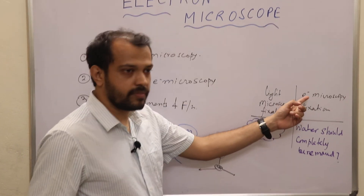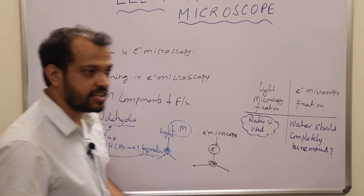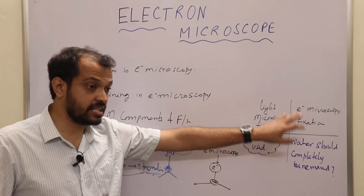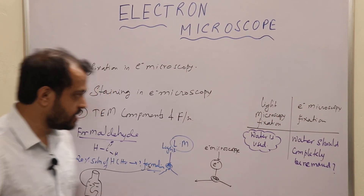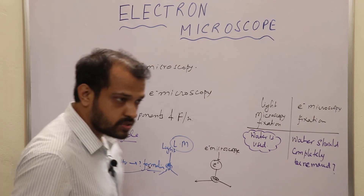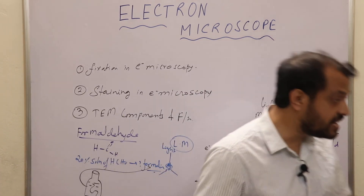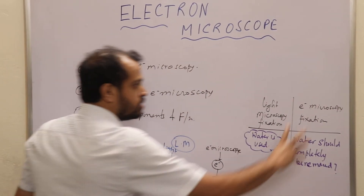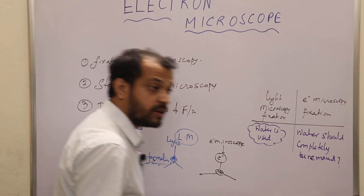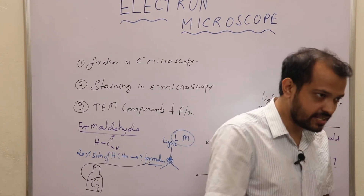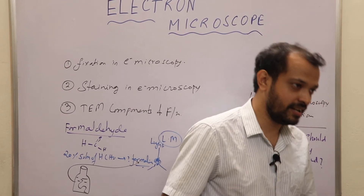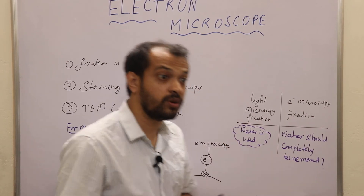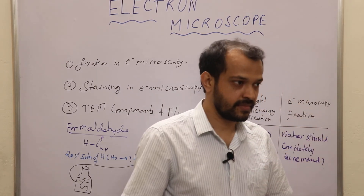Now we will talk about electron microscopy fixation — that is, the fixatives used in electron microscopy. We don't directly use formaldehyde in electron microscopy fixation, because formaldehyde is a strong agent that needs to be mixed with water, and in electron microscopy no water should be used. That is the basic reason we don't use only formaldehyde.